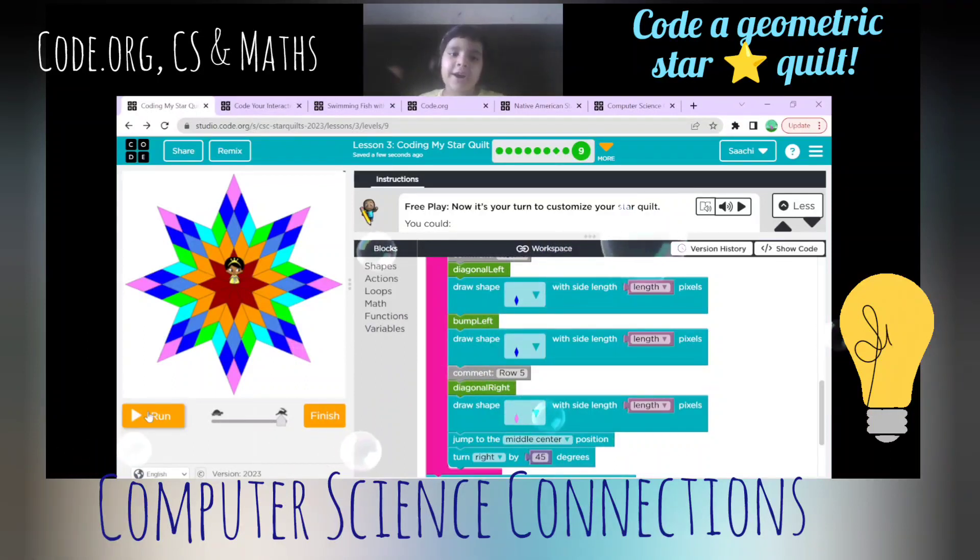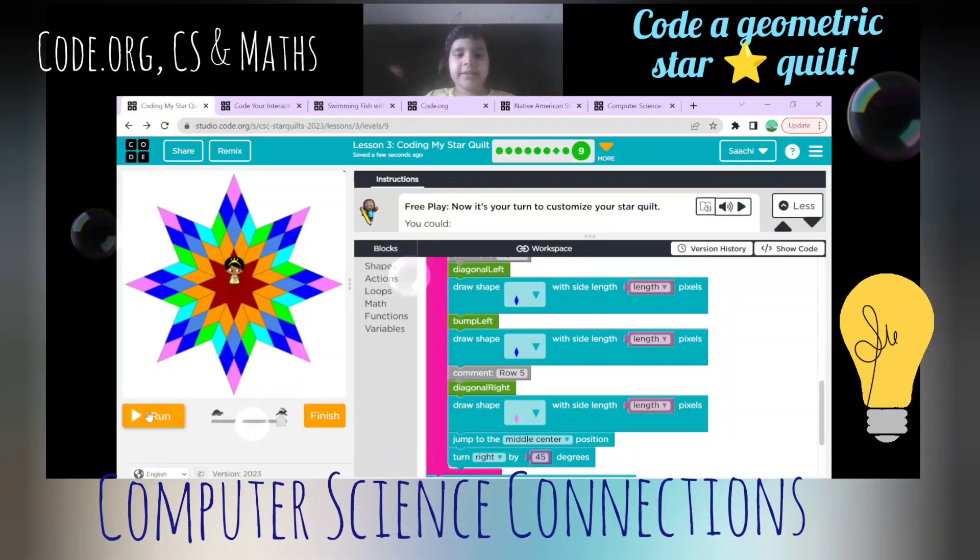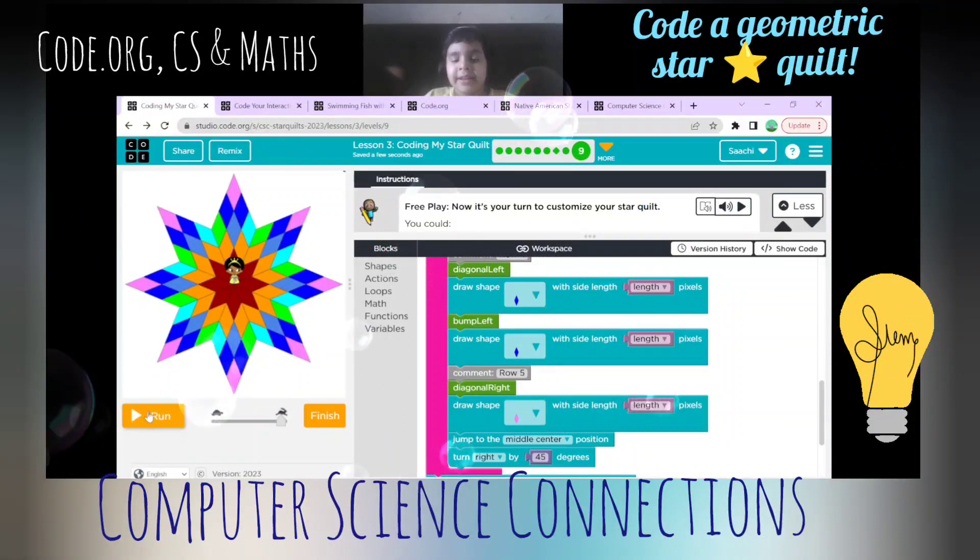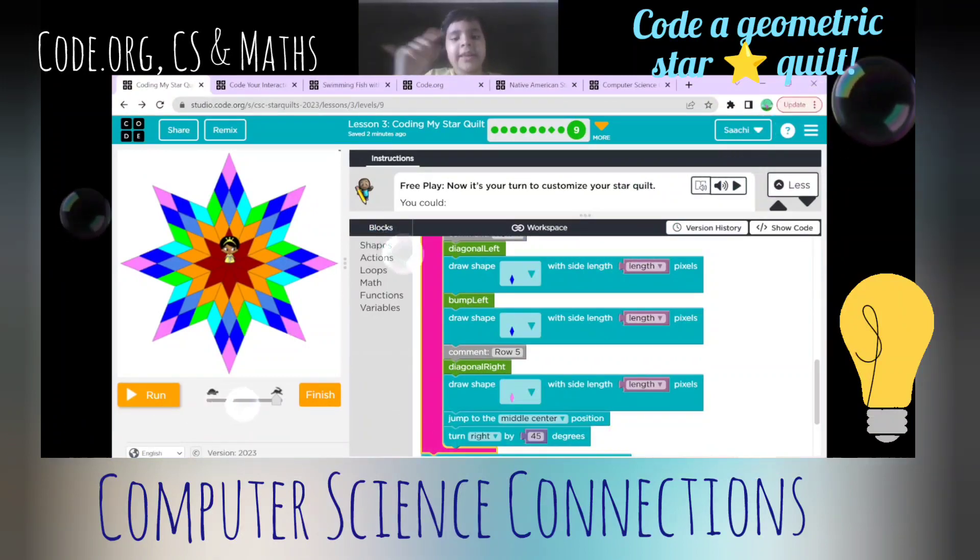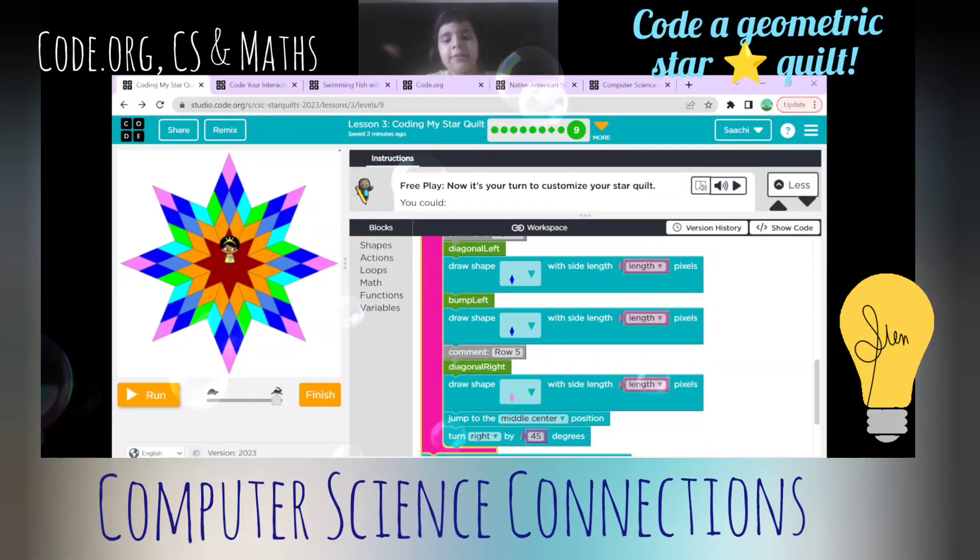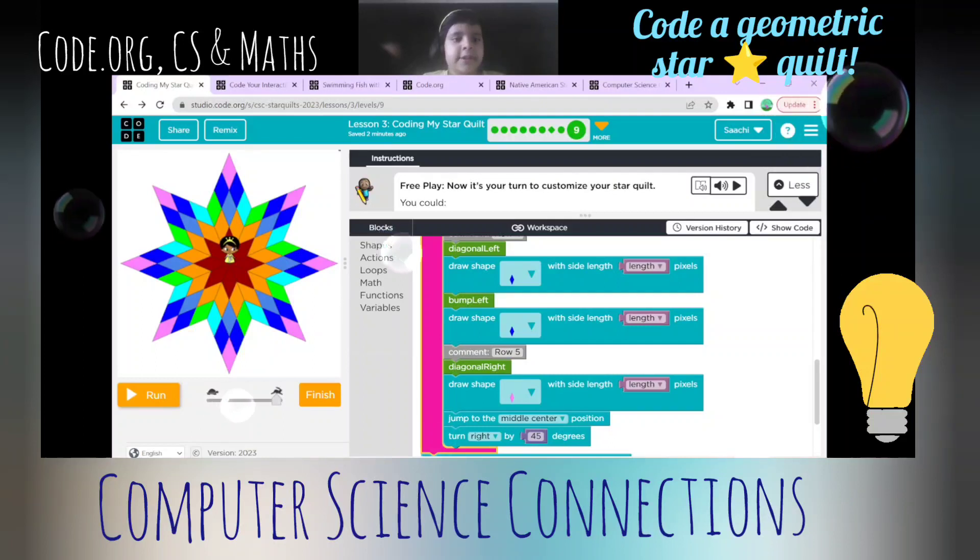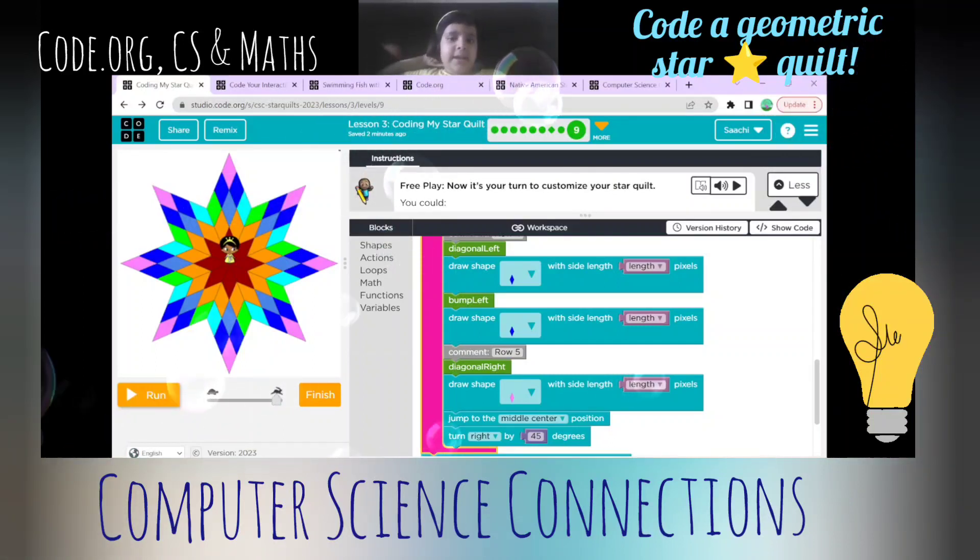So what we learned from this: we learned coordinates, angles, and directions. Direction is in the bump diagonal right and bump right. So the direction is right and the 45 is the angle.